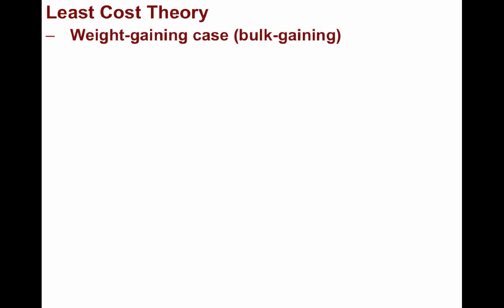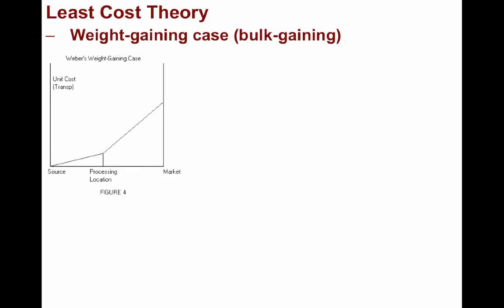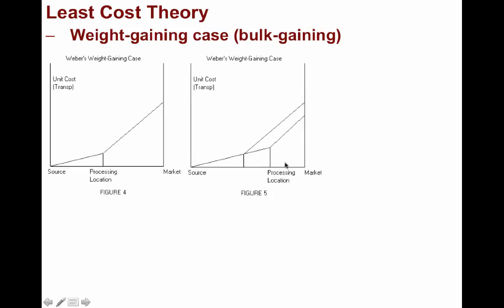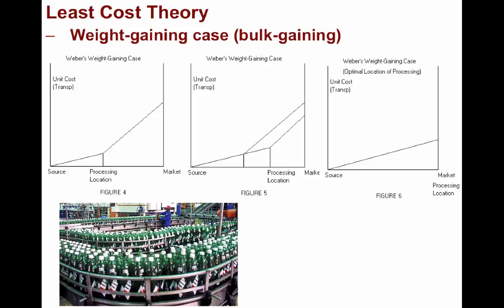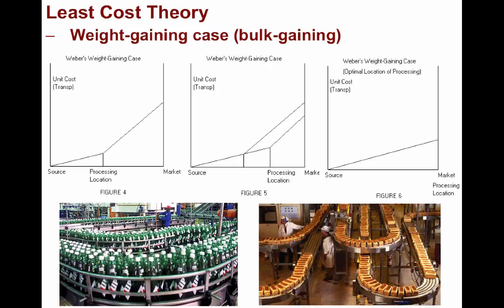Next is the weight-gaining case, or the bulk-gaining case. In this instance, when you're bringing whatever it is from the source, after you process your good, the weight or bulk of it will increase, and so will the transportation cost. This sort of thing could happen if you're adding water to whatever you're making. If you move your processing location closer to the market instead of the source, the cost of transportation goes down. Ultimately, you want to bring your processing location as close to the market as possible. The weight-gaining case works well for bottling — adding water to soft drinks or beer — or making bread products, since it's a lot cheaper to bring flour than the actual bread itself.